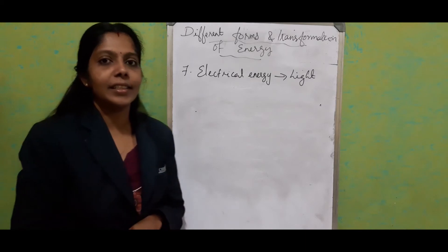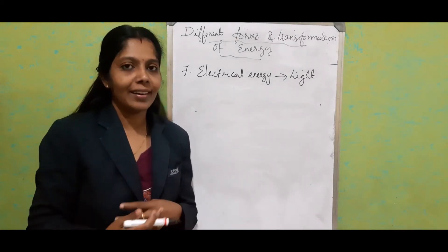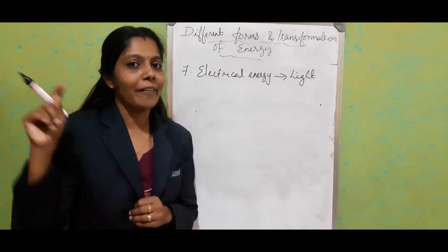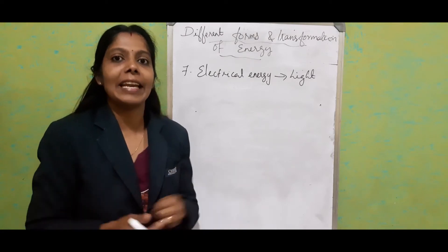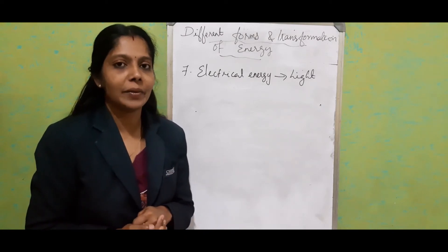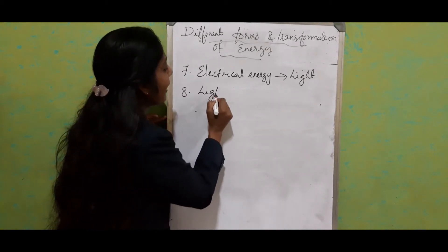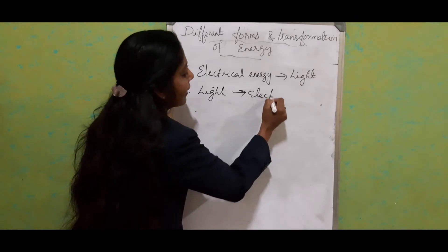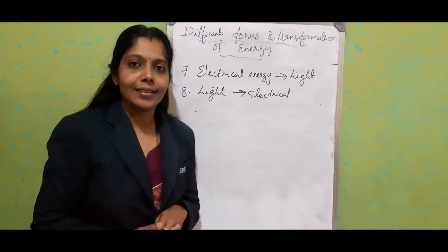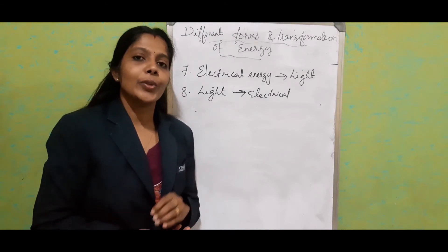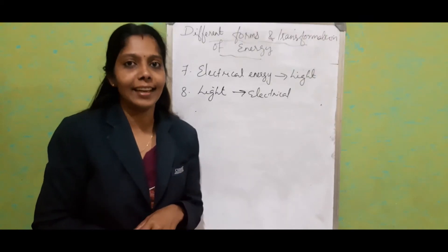Next one: electrical energy to light energy. When we want to get light from a bulb, we put the switch on. Electrical energy passes through the bulb and finally we get the output as light. Next one: light energy to electrical energy. You are very familiar with solar cells — solar cells absorb light energy and convert it into electrical energy.